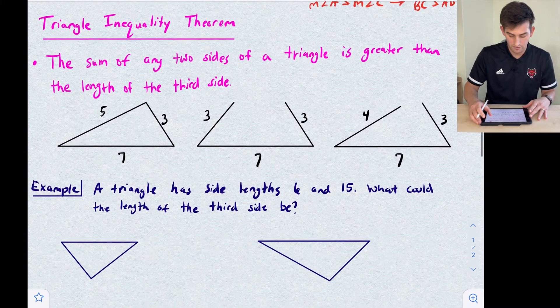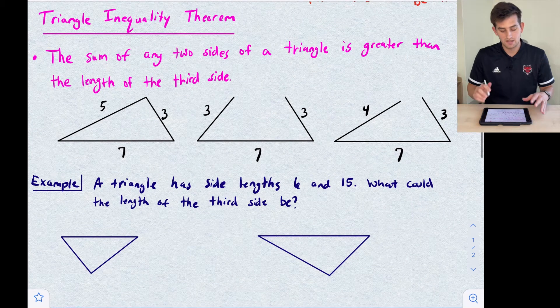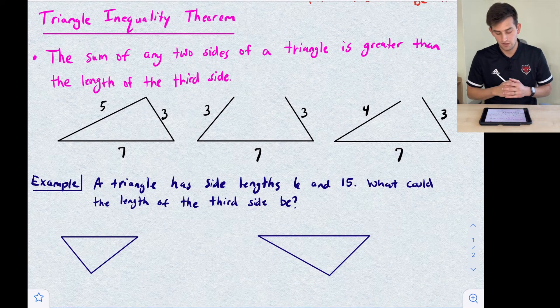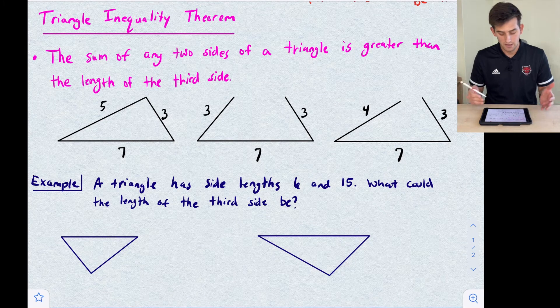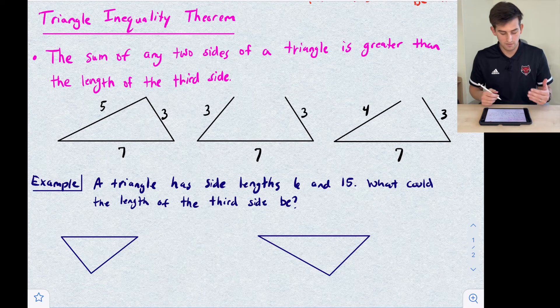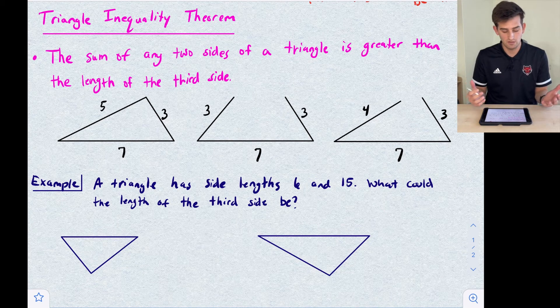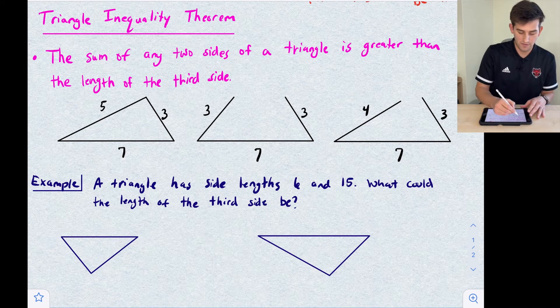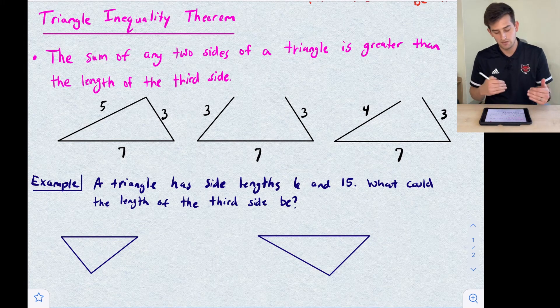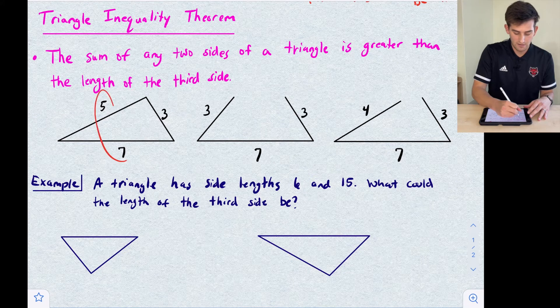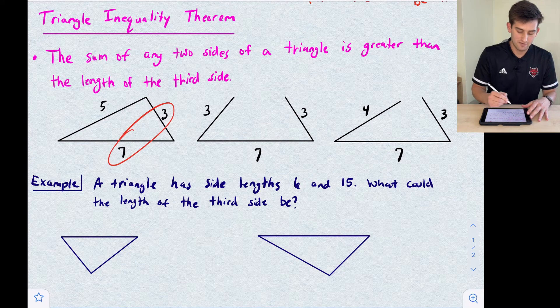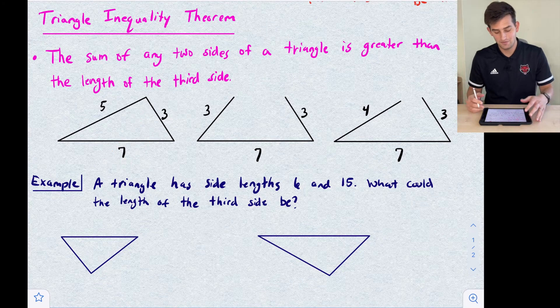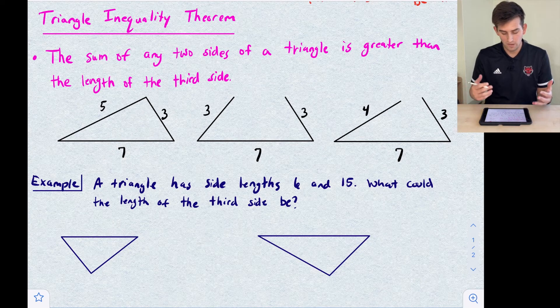The Triangle Inequality Theorem says the sum of any two sides of the triangle has to be greater than the length of the third side. We see three examples of this here. The first one works because we have 5 plus 3 which is 8, and 8 is greater than 7. If we add 7 and 5 that's 12, which is greater than 3. And if we add 7 and 3 that's 10, and 10 is greater than 5.